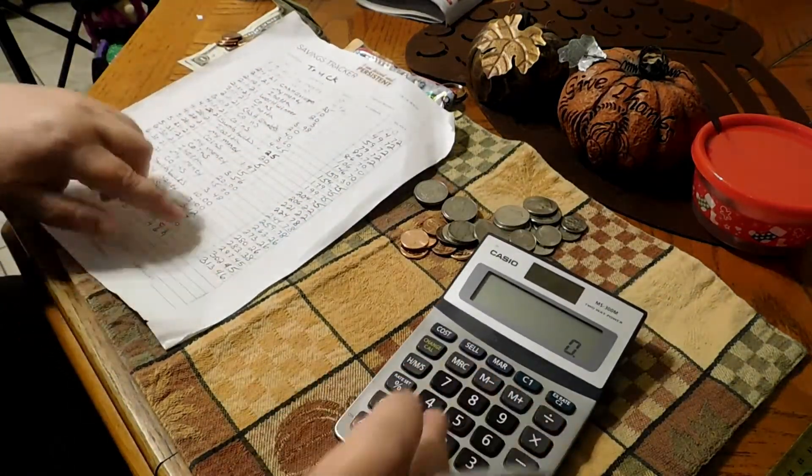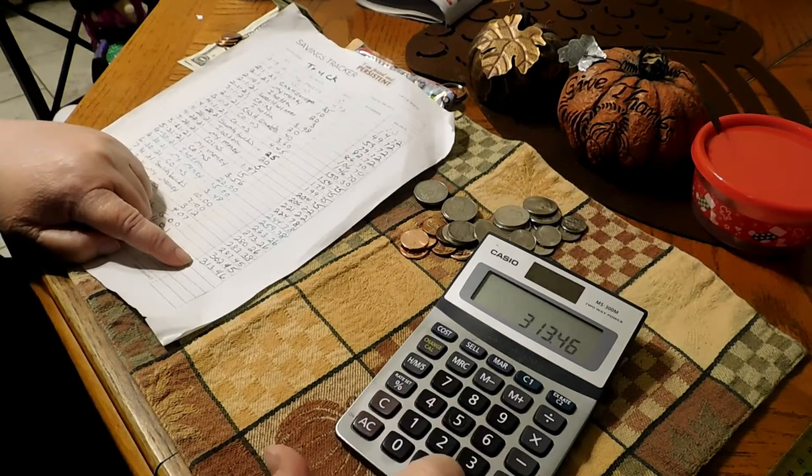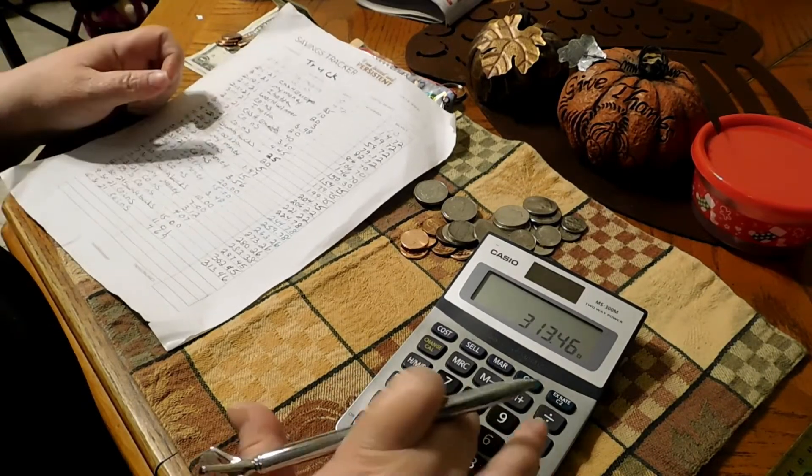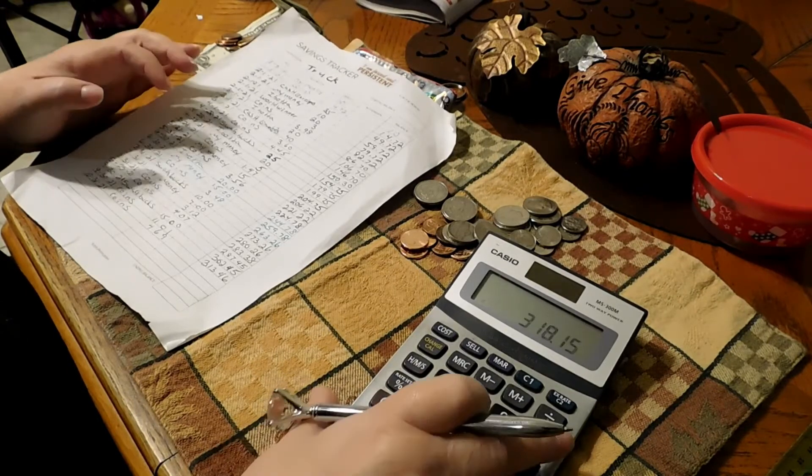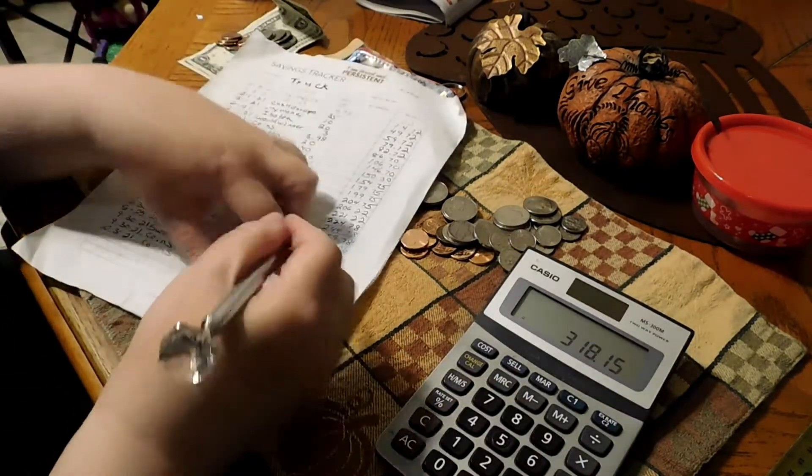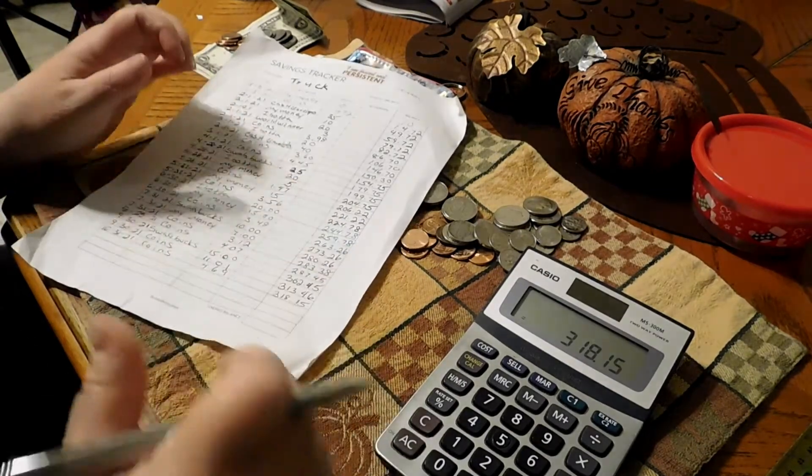Alright, we have $313.46 plus $4.69 equals $318.15.